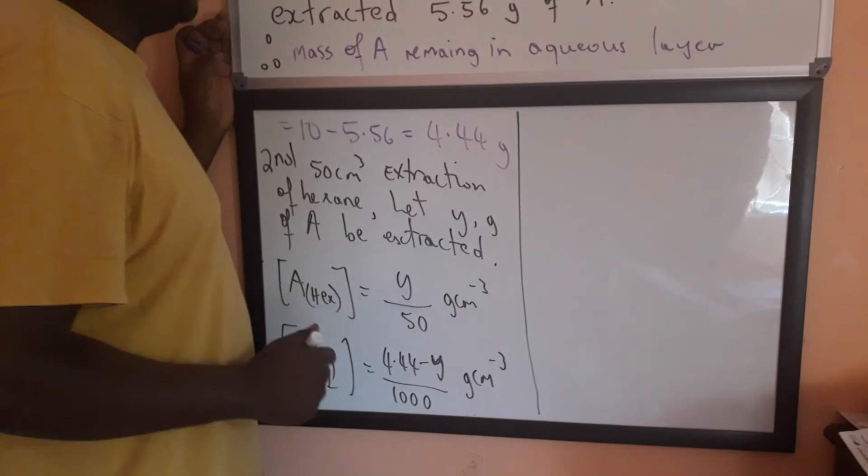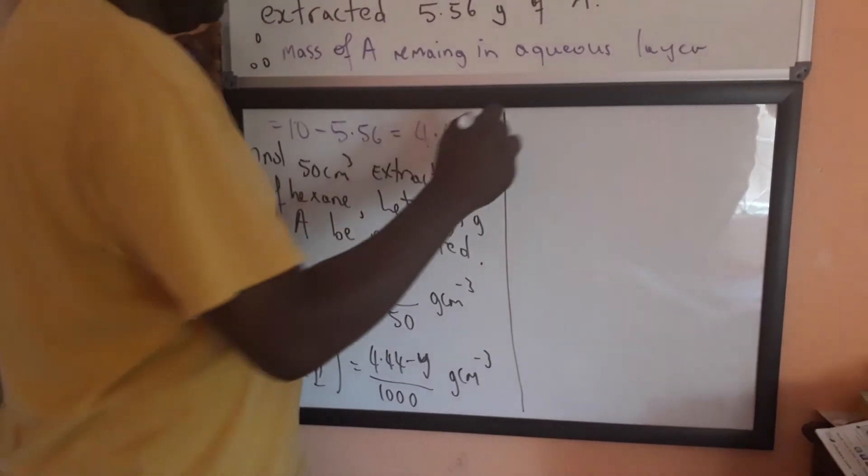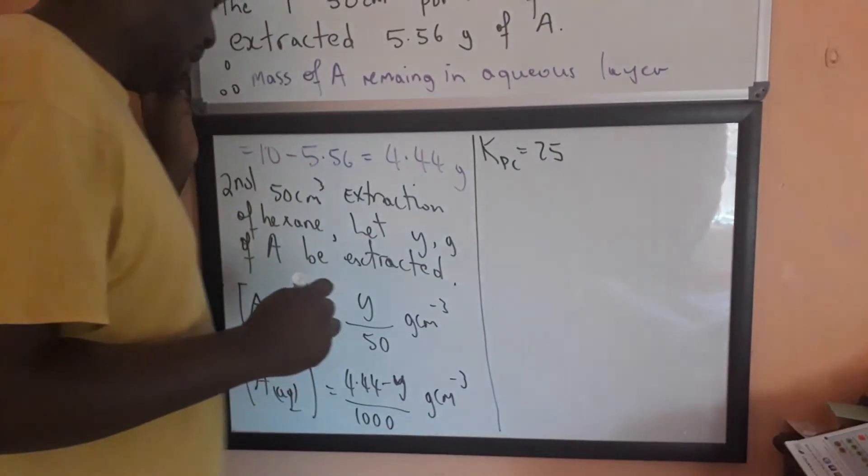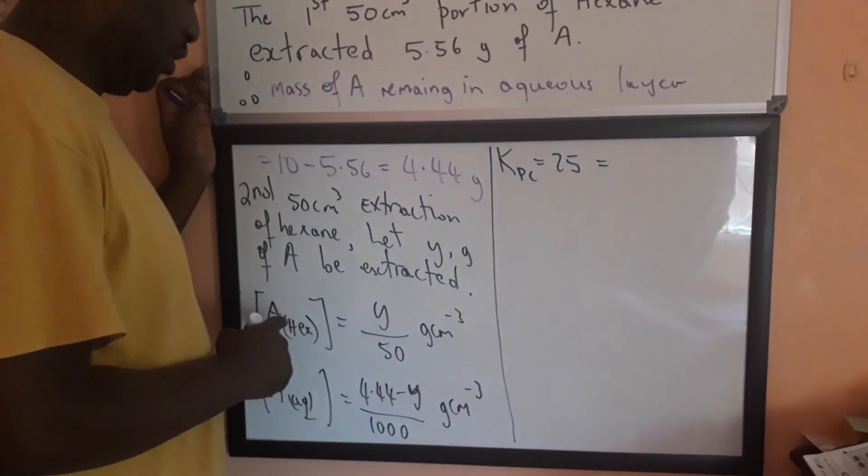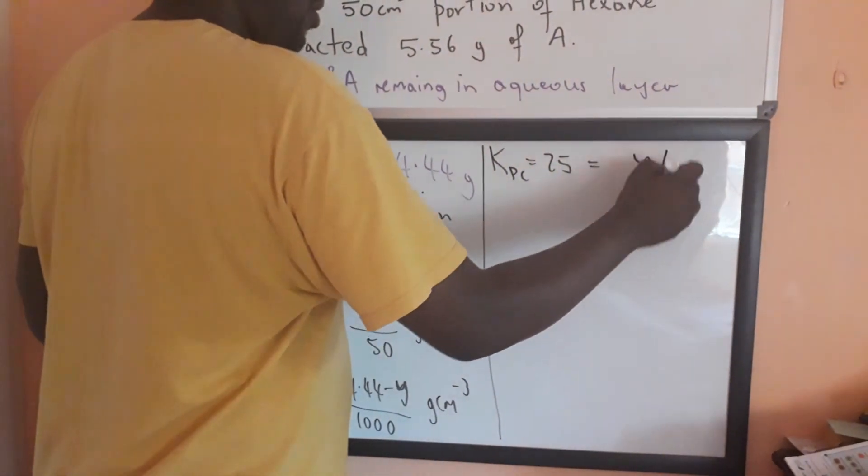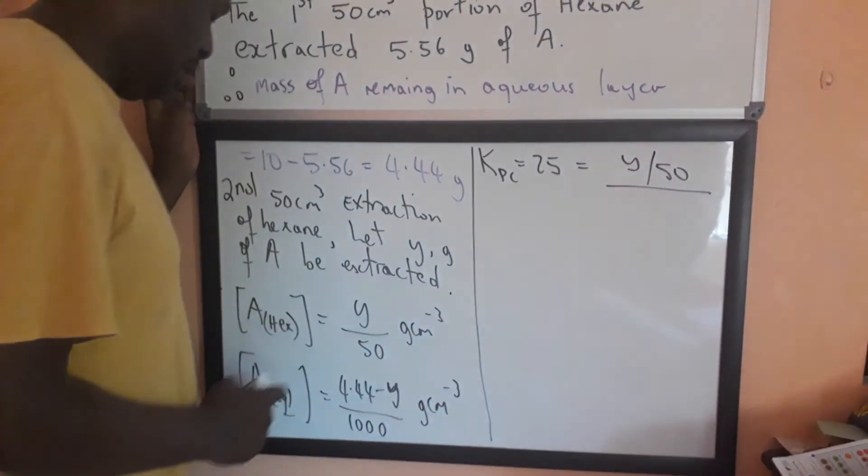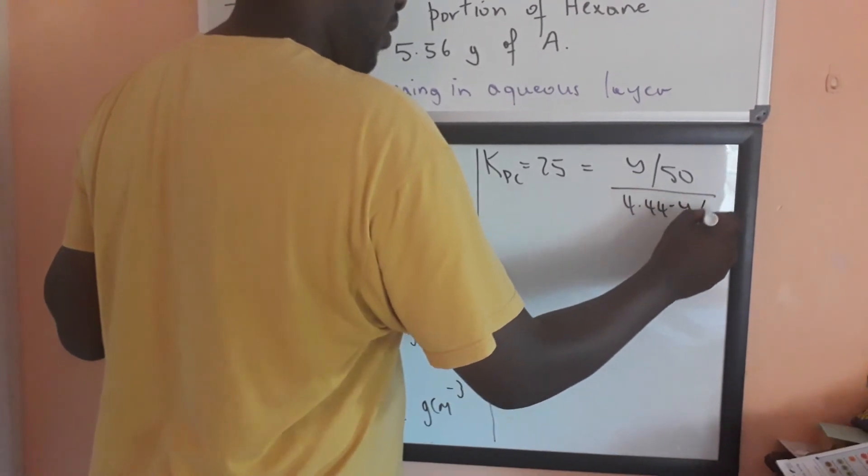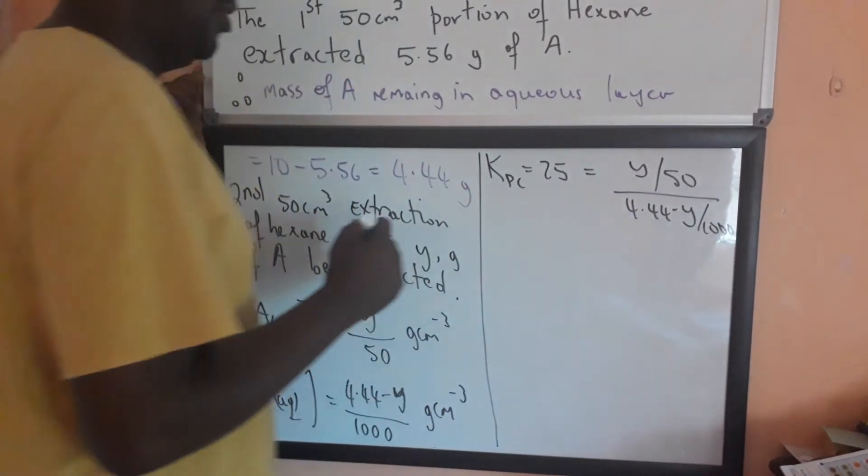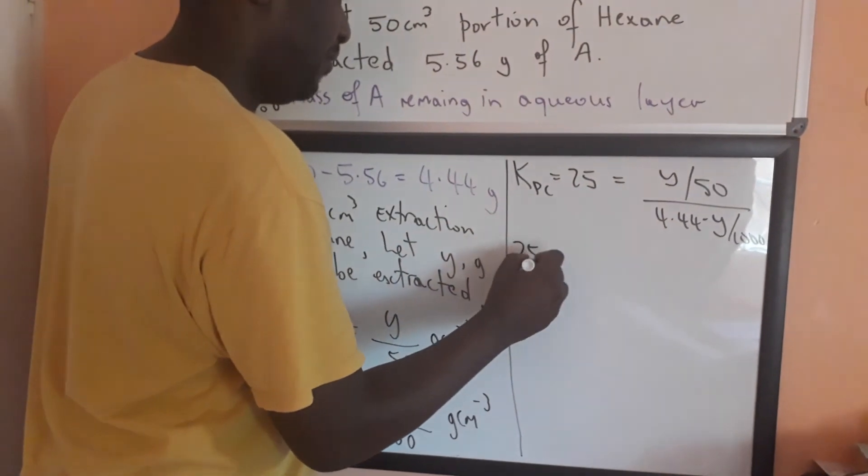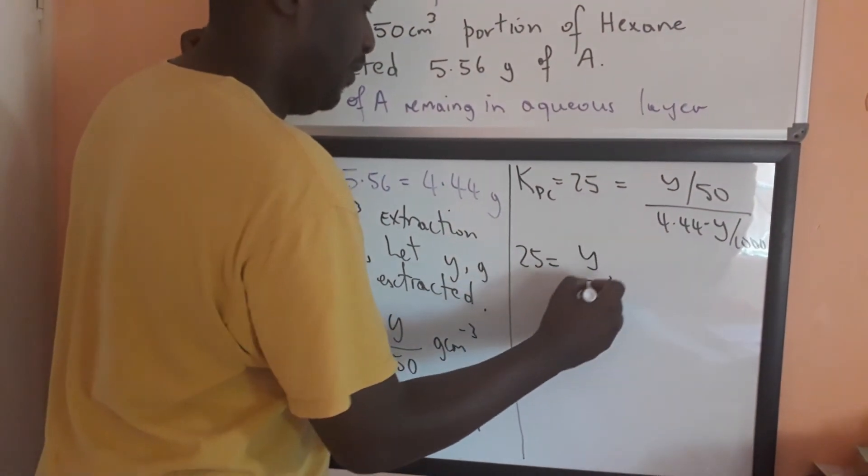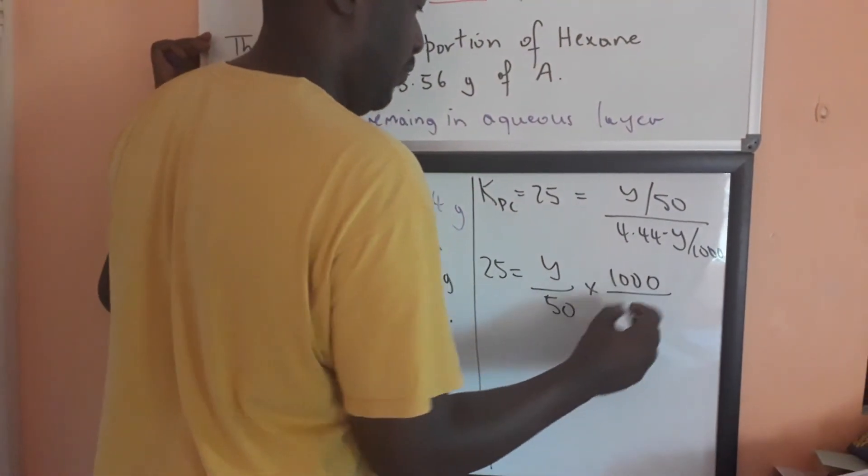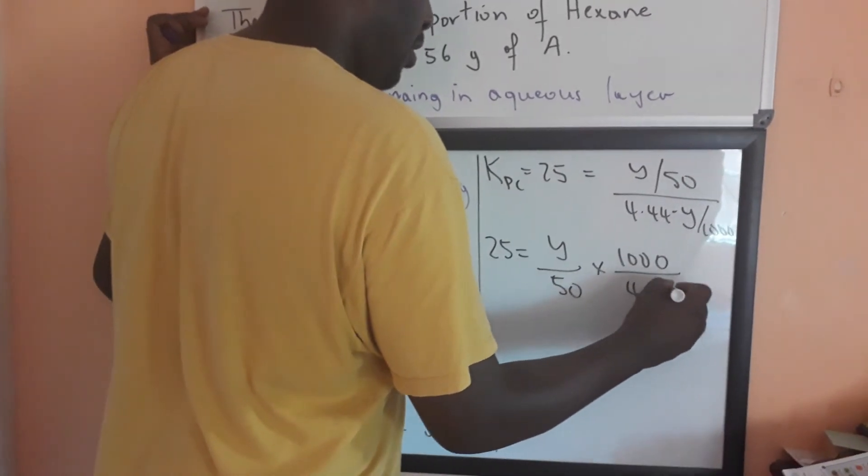Now, we can plug this back into our expression for KPC. So, KPC is 25. And that is going to be equal to the concentration of A in hex, Y over 50, divided by the concentration of A in aqueous, 4.44 minus Y over 1,000 centimeter cubed. So, 25 is equal to Y over 50 times 1,000 over 4.44 minus Y.